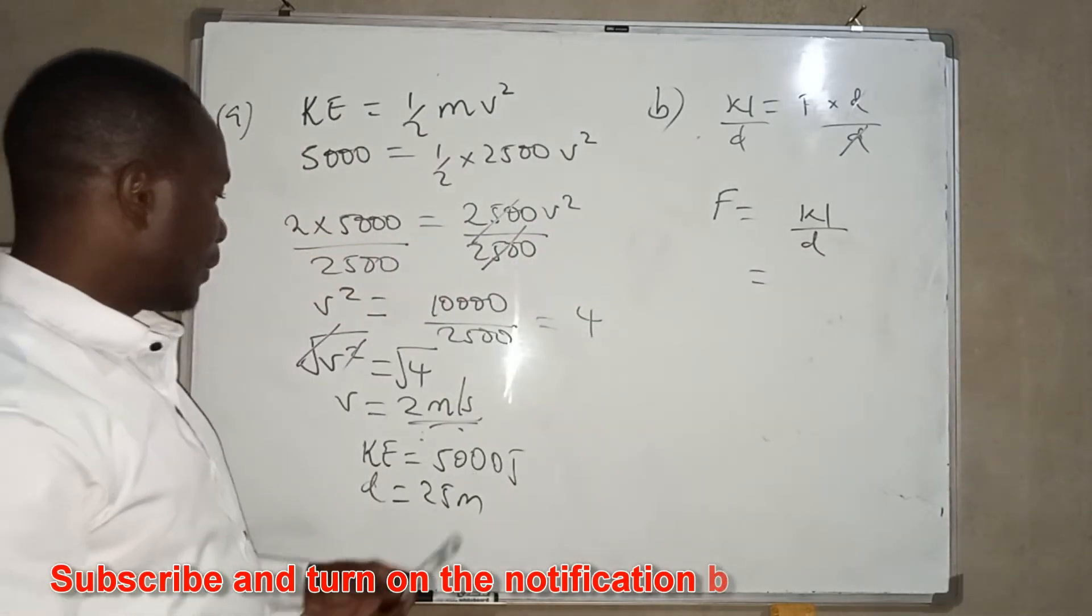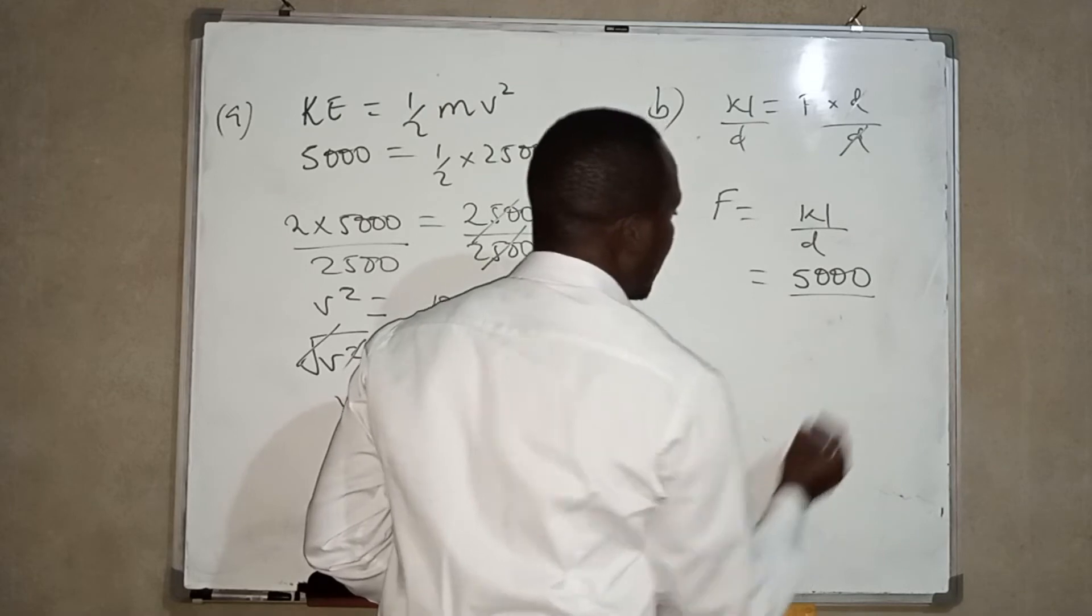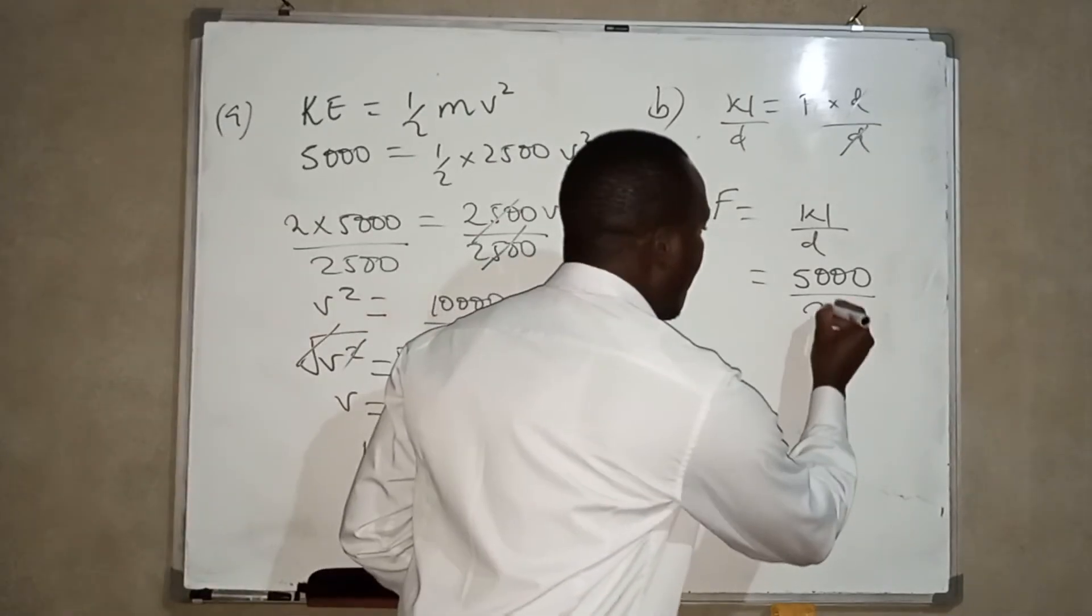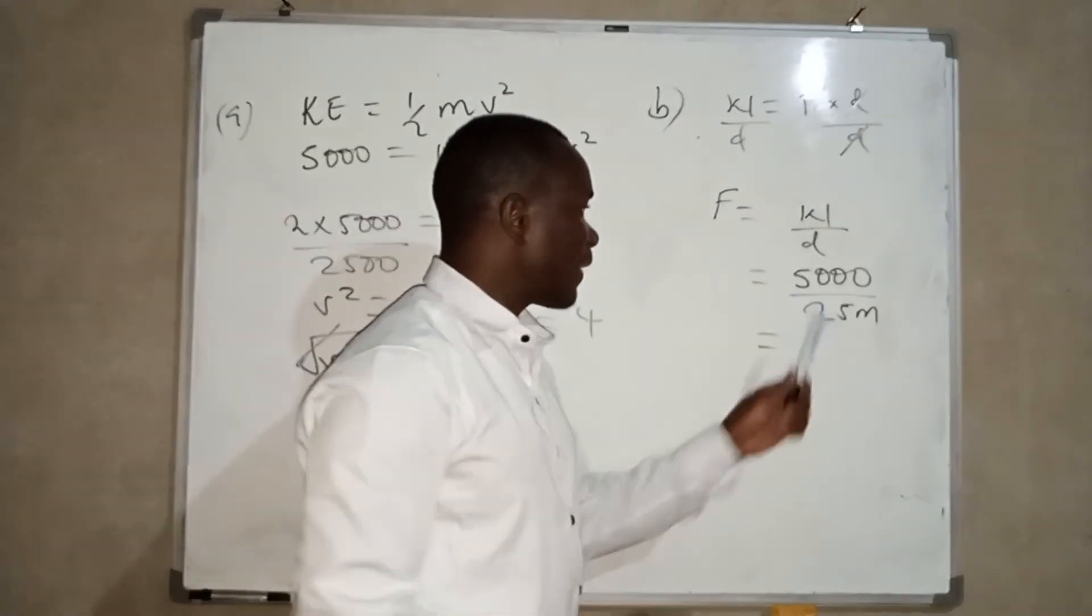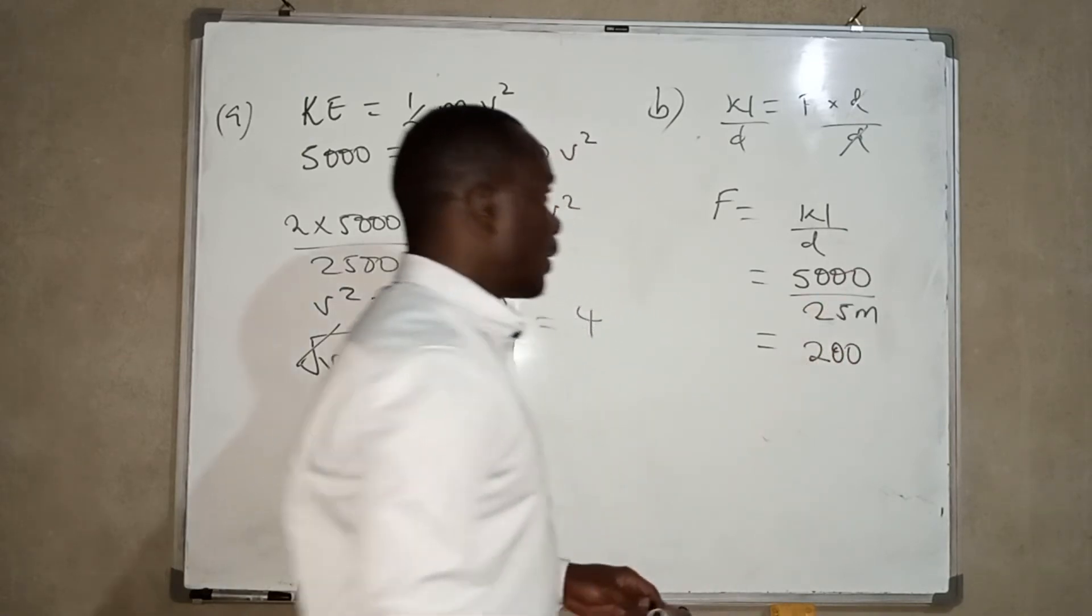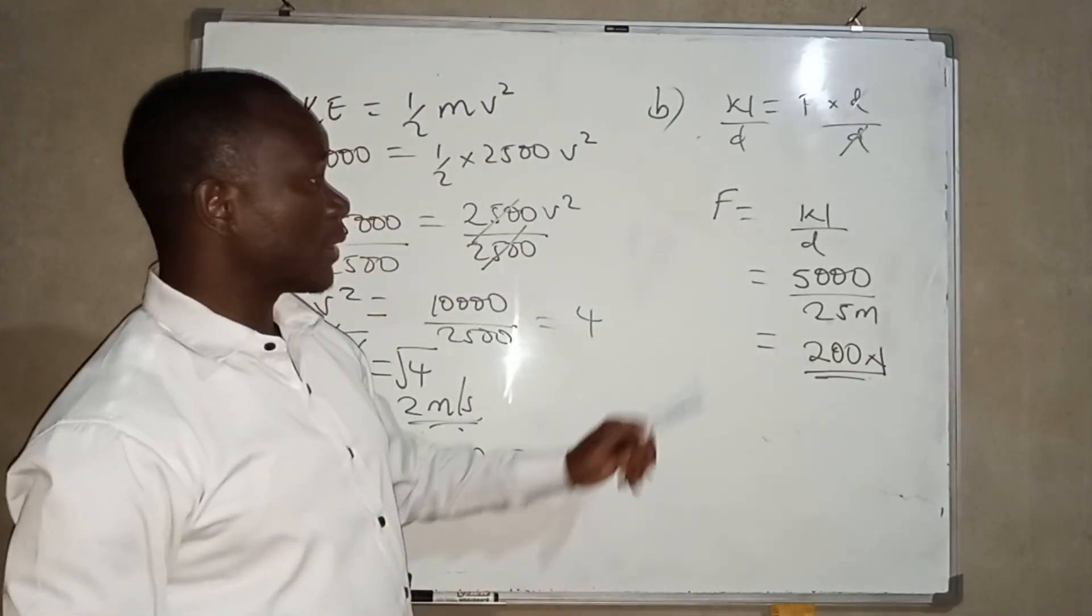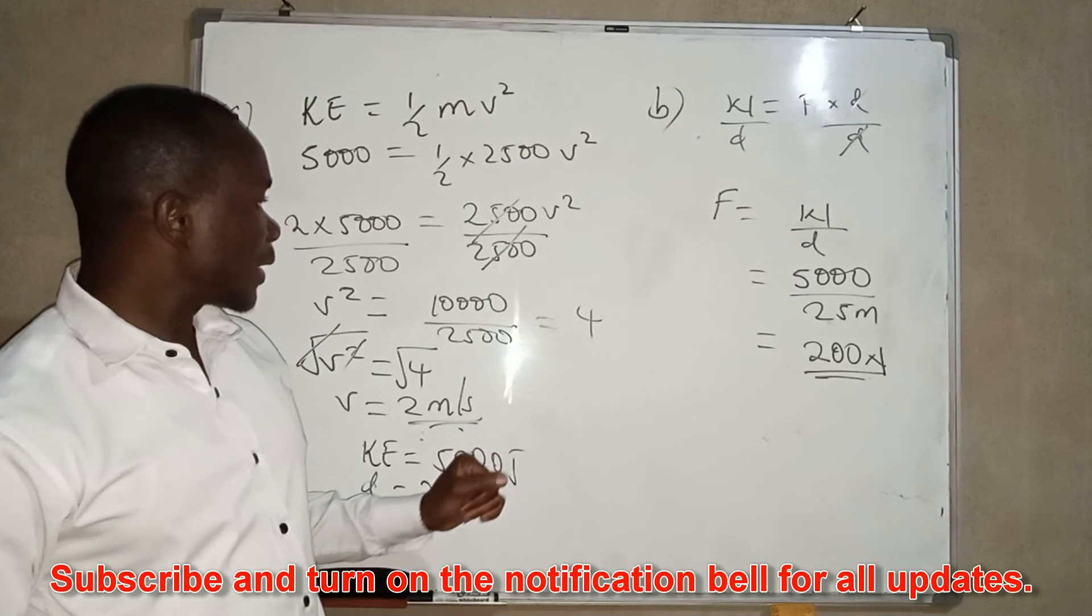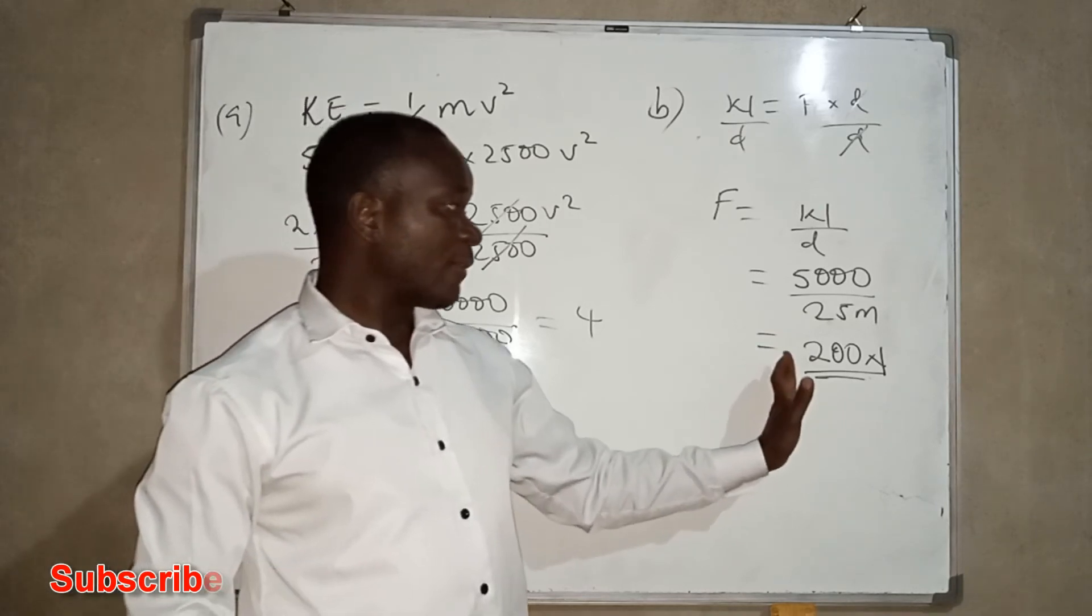And from this, we have the work, we have 5,000, then here we have 25 meters. So what we are going to get is 200 newtons. So this is the value for the horizontal force that the mechanic must apply in order to move from rest to this final velocity, which is 2 meters per second, and so this is the value of the force.